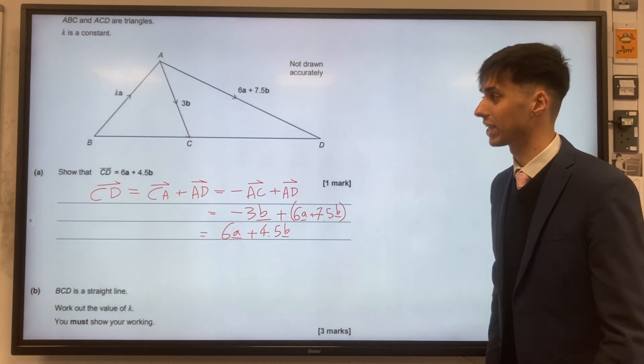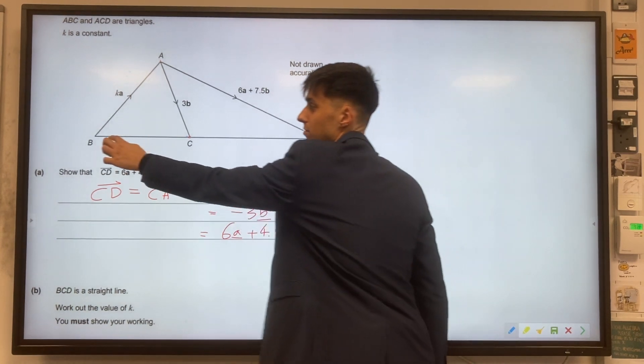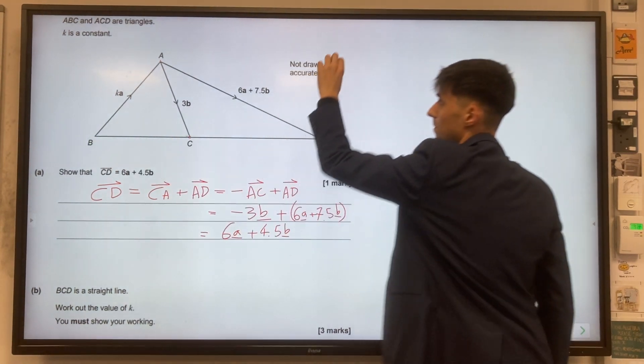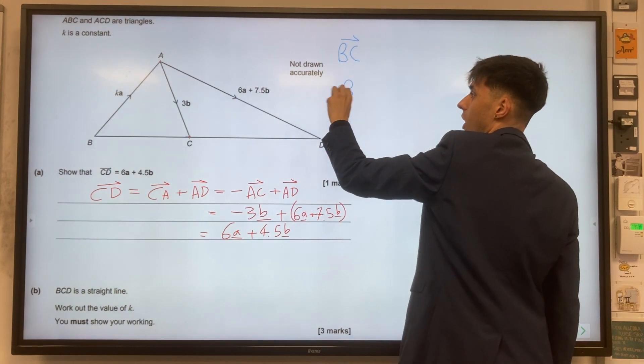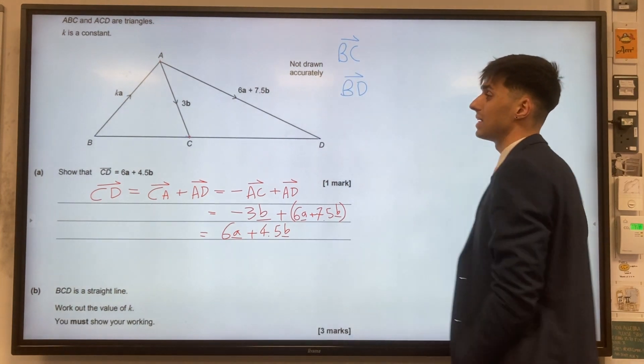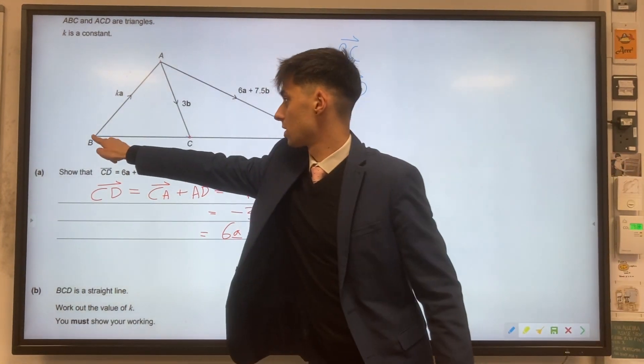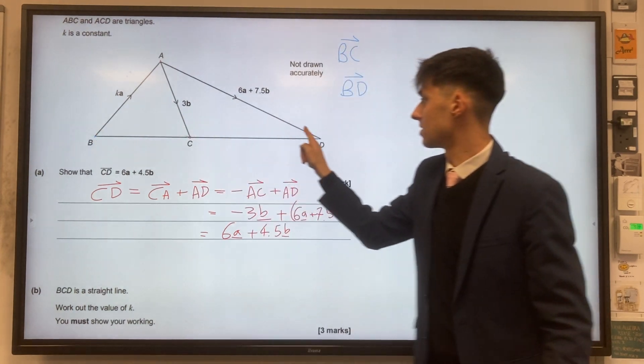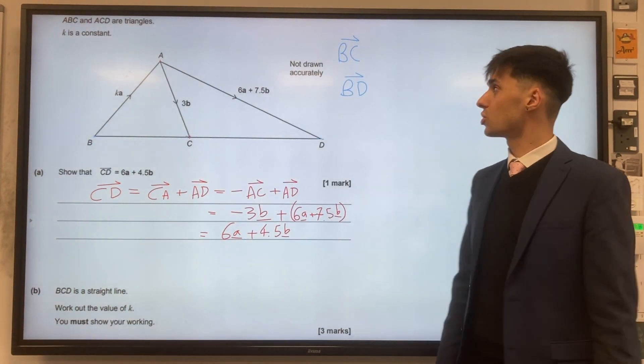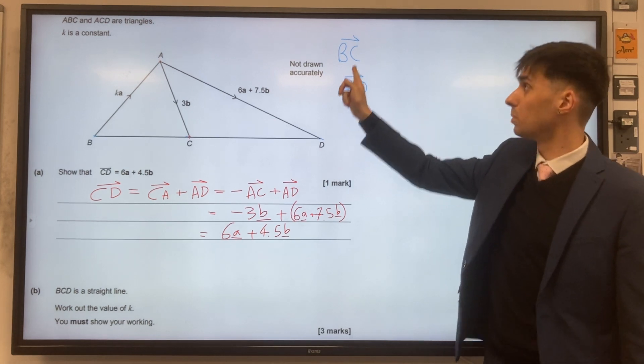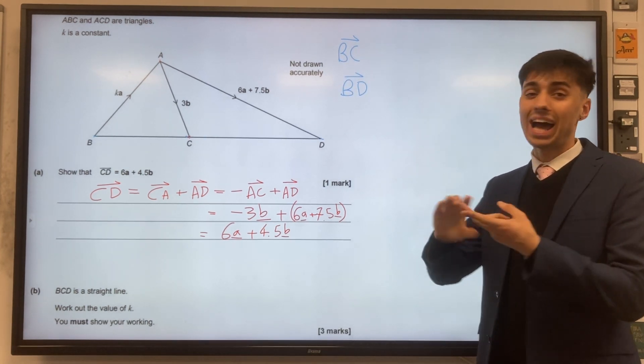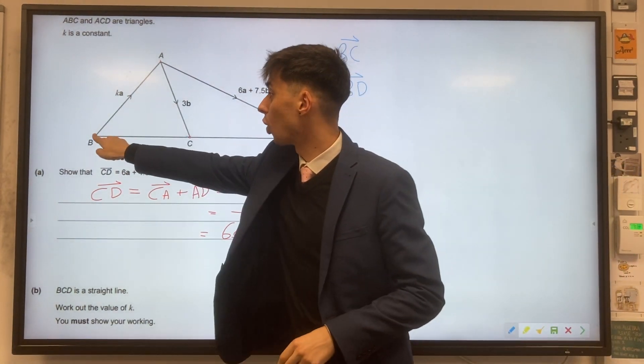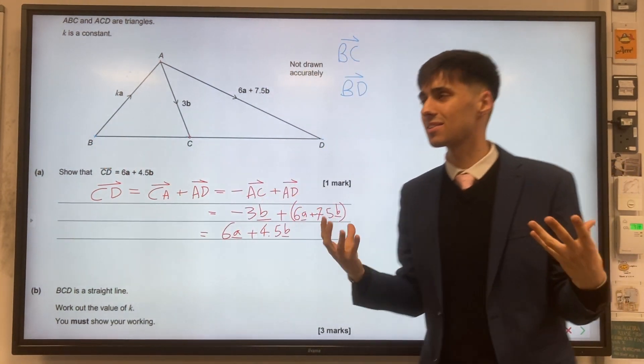So let's use two vectors that we can find. We can find the vector BC and then BD. What we want to do is show that BD is a multiple of BC. That means they're parallel. And additionally, they both share B in common. So if they're parallel, they must be the same line.